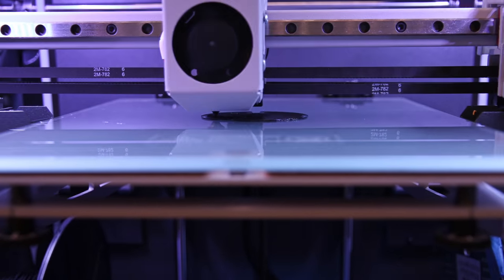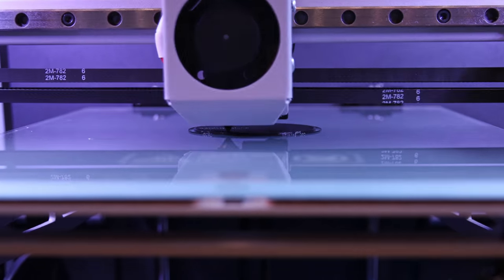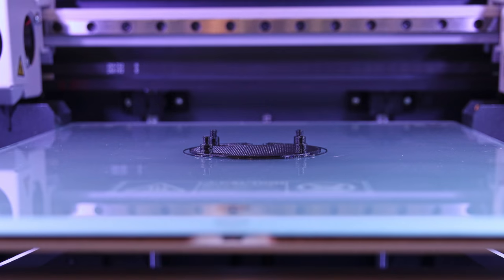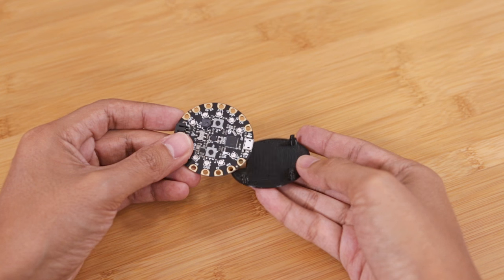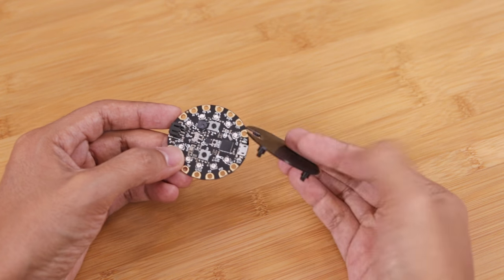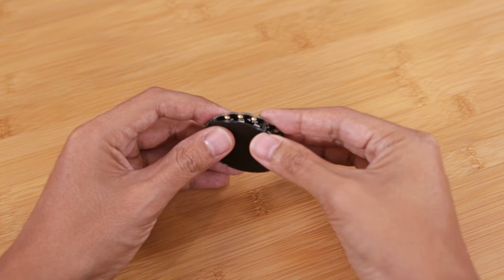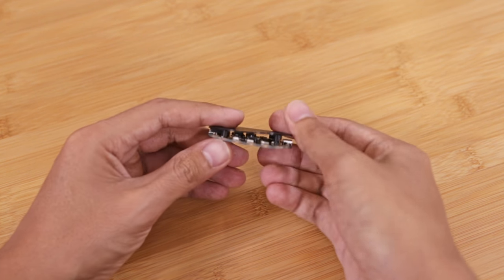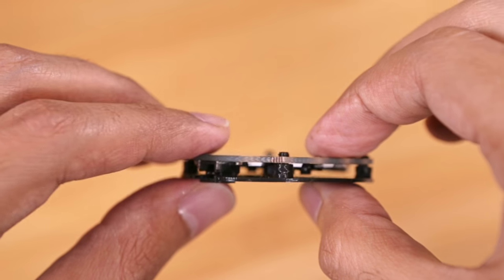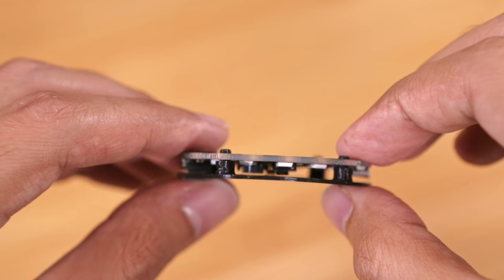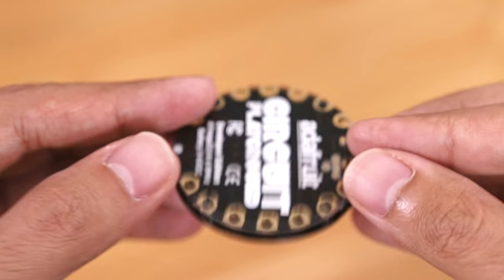Next I'll 3D print the mount for the circuit playground board in PLA. The standoffs on the mount have these little pegs that snap into the holes on the circuit playground. Some of the components like the buttons and the JST connector are a little bit tall, so the standoffs will give the mount that extra clearance.